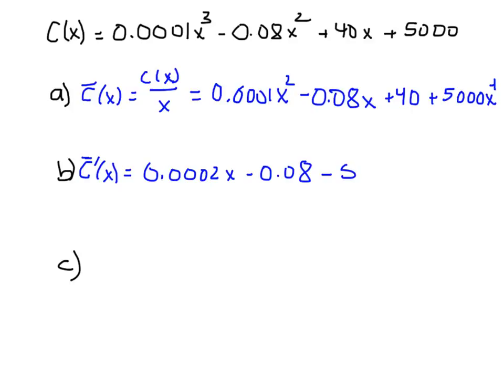You could also write that as 5000/x². In fact, I'm going to do that right here just because it makes it a little easier to do our calculations. So we have our average cost function and our marginal average cost function.